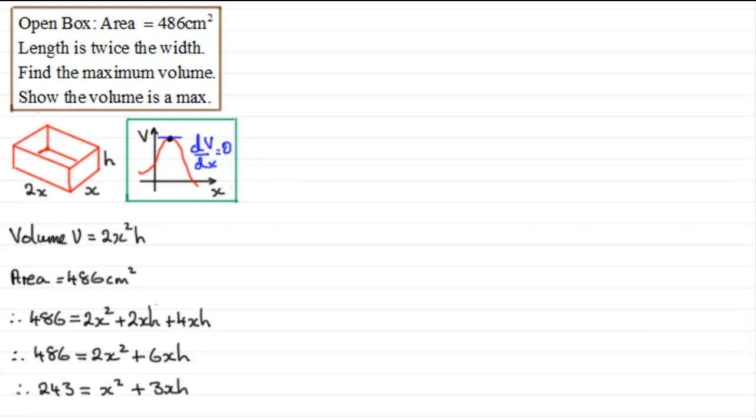Now I can see that I could simplify this further just by dividing through by 2. 2 is a factor of each of these three terms. So if I divide through by 2, you're going to get 243 equals x squared plus 3xh. Now we should be able to make h the subject from this, express h in terms of x. So if I subtract x squared from both sides, we'd have 3xh equals 243 minus x squared. And then I would divide by 3x on both sides. So I would end up with therefore h equaling 243 minus x squared, all divided by 3x.